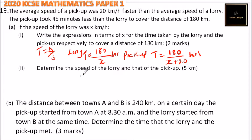Then part (ii): determine the speed of the lorry and that of the pickup. Now the pickup took 45 minutes less. 45 minutes less is 3 quarters of an hour.